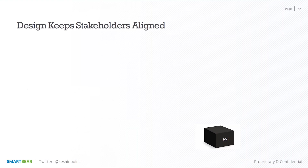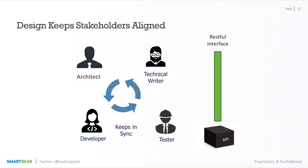Another big advantage of designing is that it keeps all internal stakeholders aligned. The green bar you see on the screen represents the design of the API, or the RESTful interface. It keeps all internal stakeholders — testers, developers, architects, and technical writers — aligned and in sync on what the API does. The contract defines what the API is, covering the requests and responses for every single resource, so there are no big open questions. It helps communicate the value of the API to stakeholders as well.